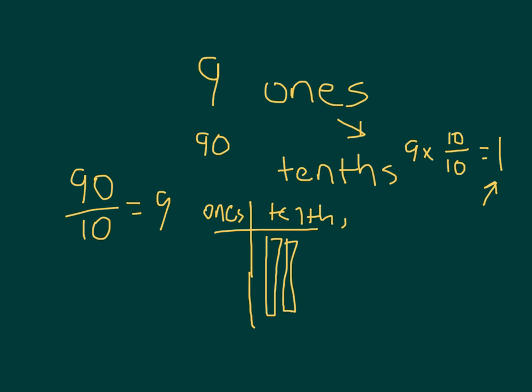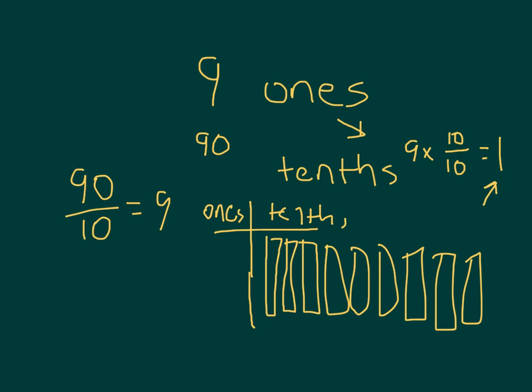And then so if I had 9 of these, 9 times 10 tenths. I had 9 of these, meaning I had 10 tenths here. I can trade each of those bars, which was worth 10, for one of those ones. 10 tenths equaling that 1. I just didn't bother to draw the whole thing there.